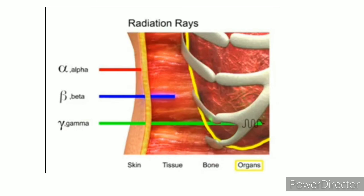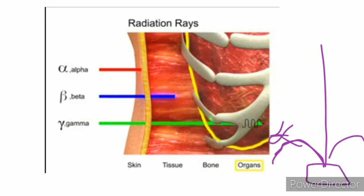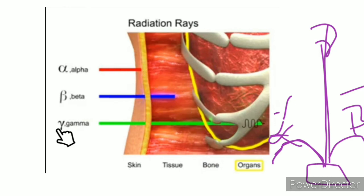To diagnose diseases, radioisotopes emit alpha, beta, and gamma radiation. Alpha is positively charged, beta is negatively charged, and gamma is neutral and travels in a straight line. These radiations have different penetrating powers, which makes them useful in medical applications.